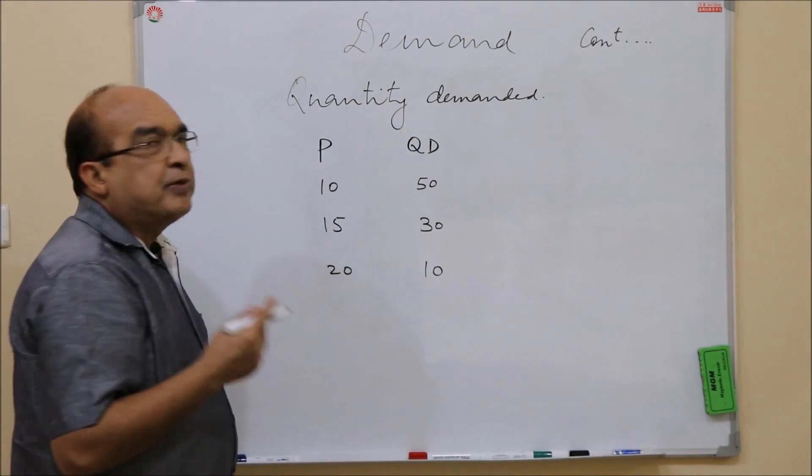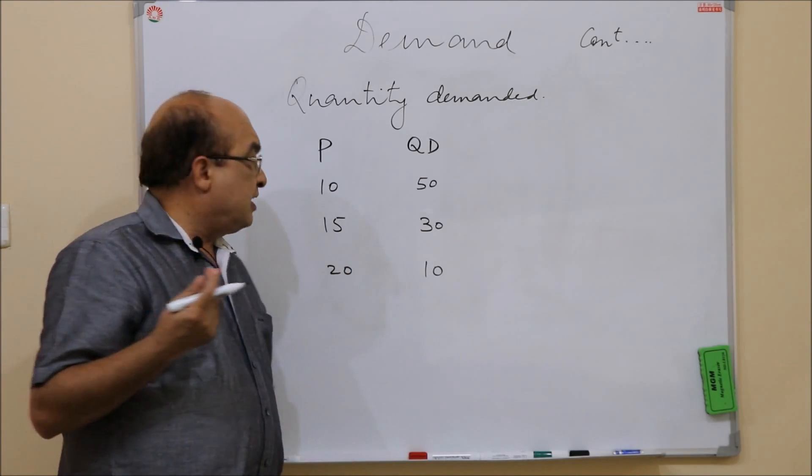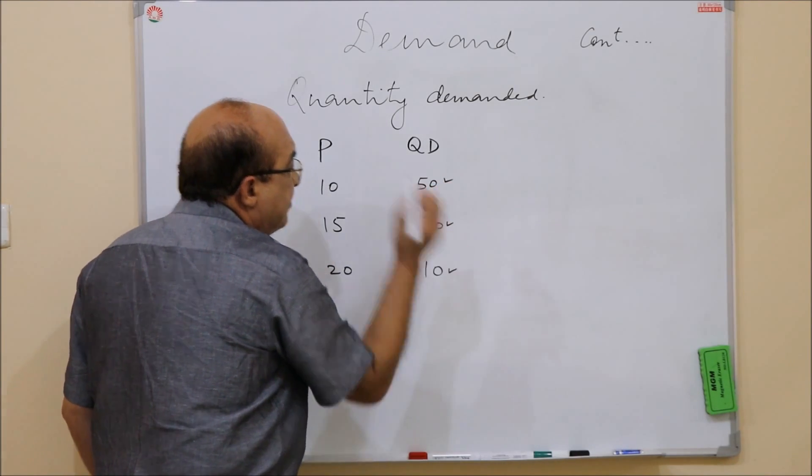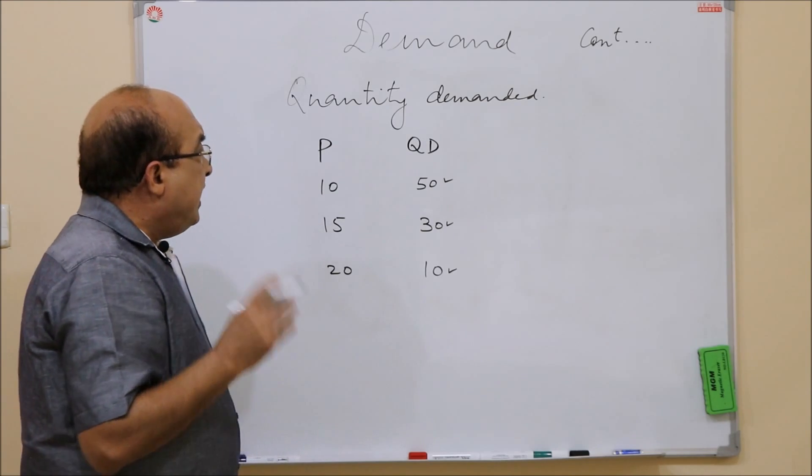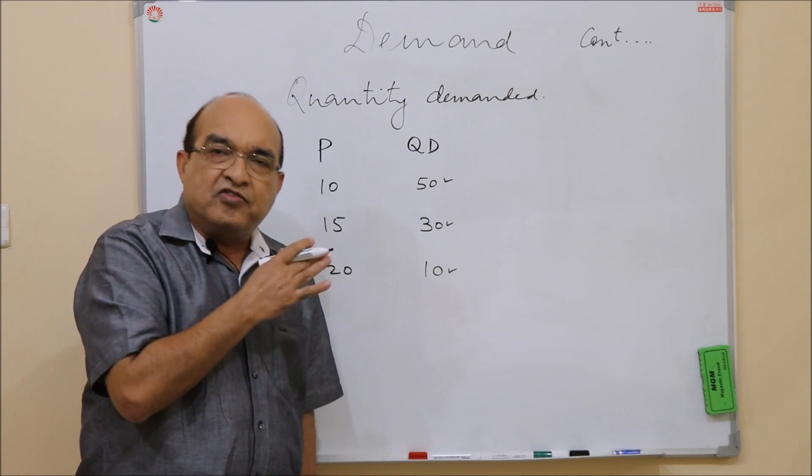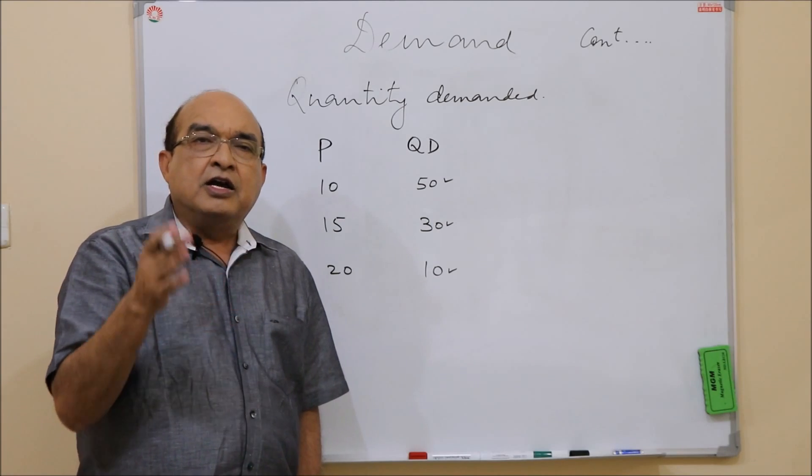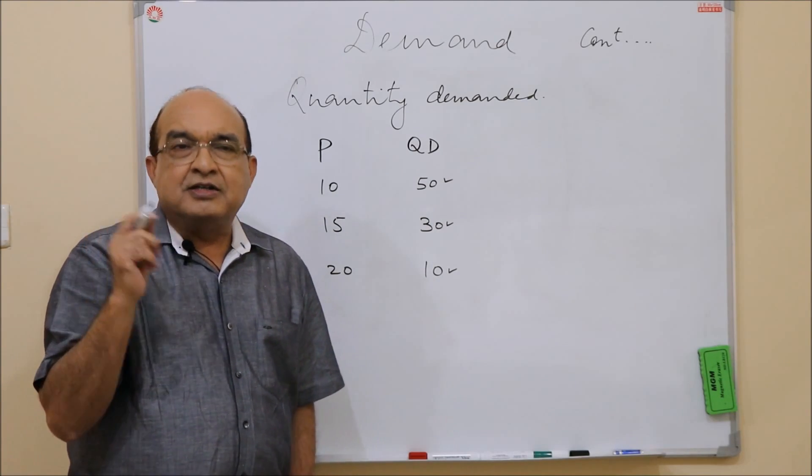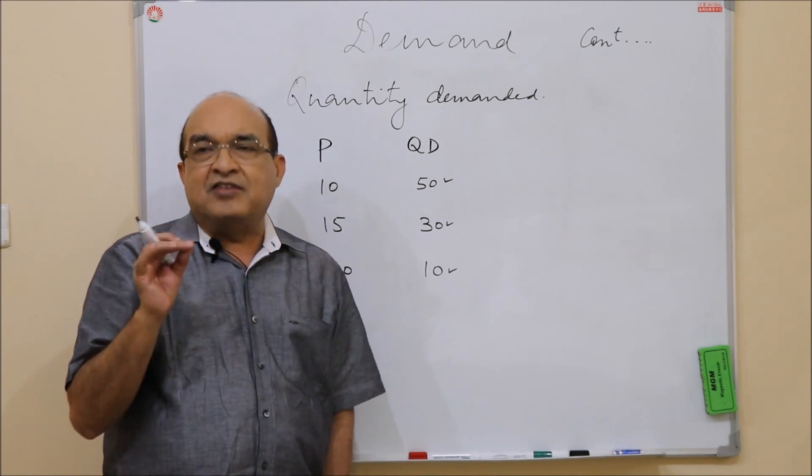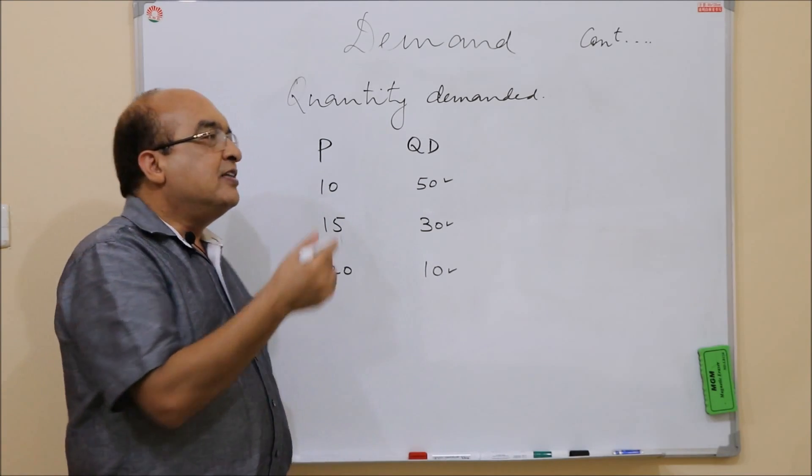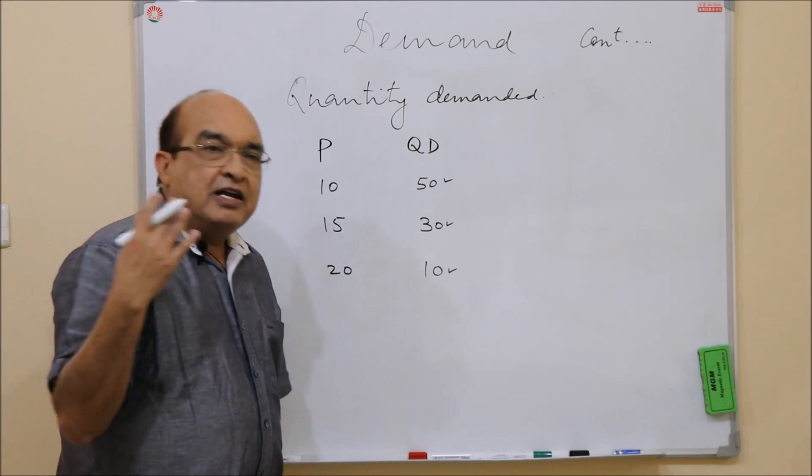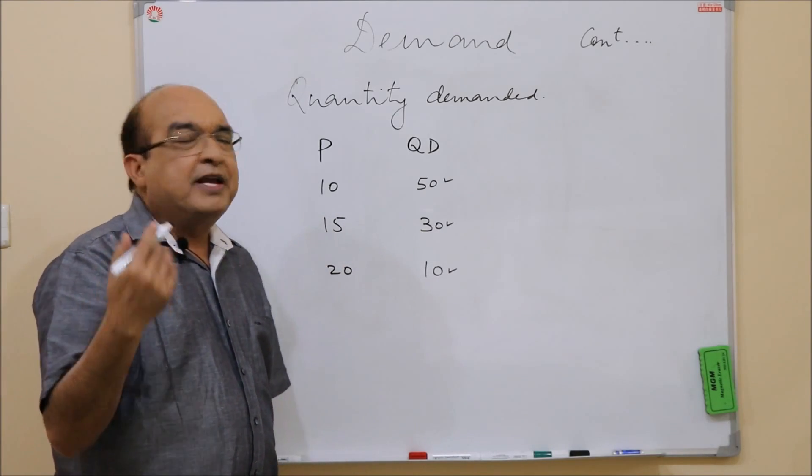Suppose when the unit price is 10, there are 10 units of the commodity which is being demanded. So this is quantity demanded, this is quantity demanded, this is quantity demanded. And when we say the various quantities that are bought at various price levels, that in totality is demand. That is, demand means the various quantities that would be bought at various price levels. That means demand is nothing but the schedule of various quantities demanded at different prices.